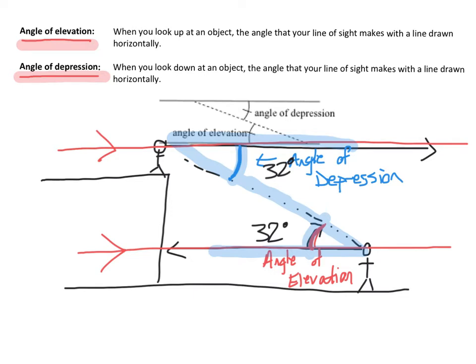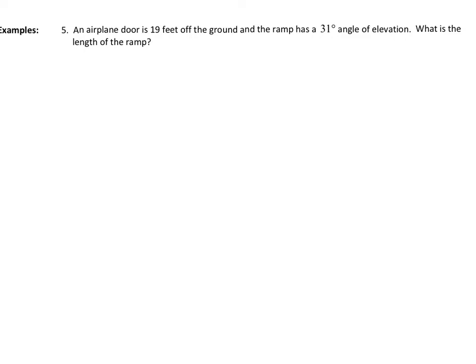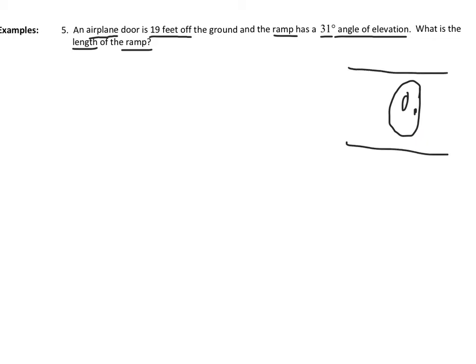So let's use this information and try to solve our first word problem. For this first example, we have an airplane door that's 19 feet off the ground, and there's a ramp with an angle of elevation of 31 degrees. I want to figure out what is the length of that ramp. So let's sketch it out — here's the door for my airplane, hovering above the ground, and we have this ramp leading up to the door. They tell me that the airplane door is 19 feet off the ground.